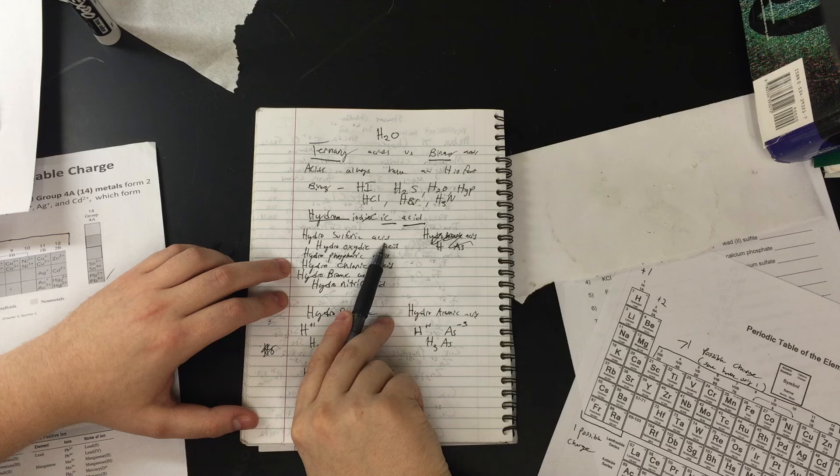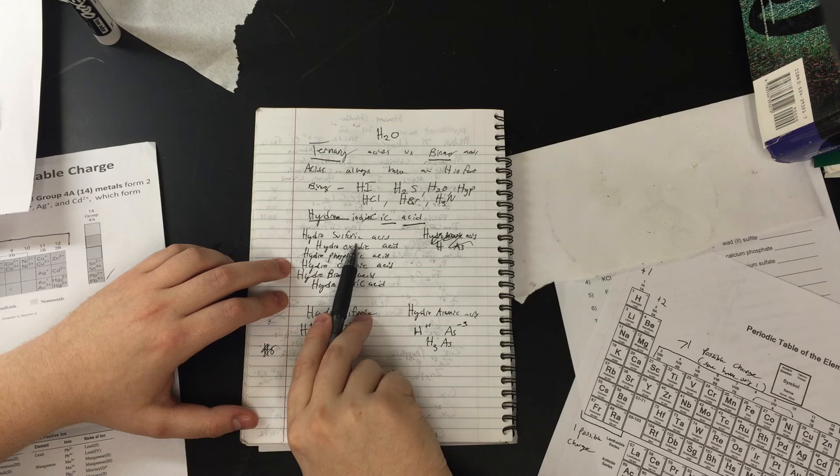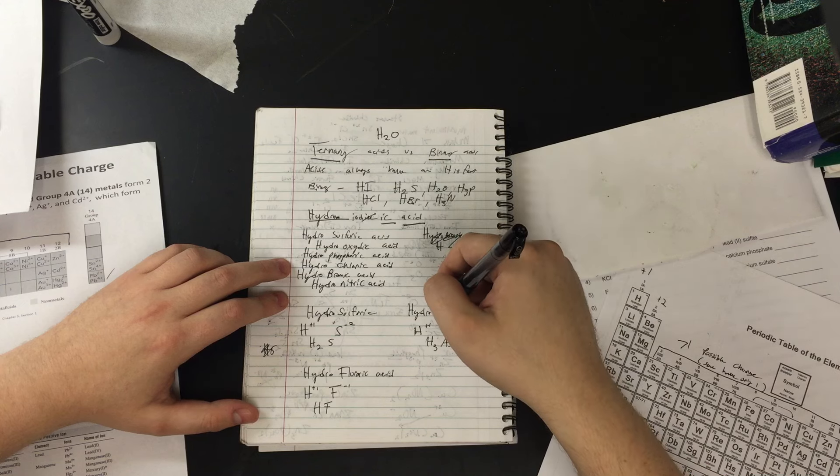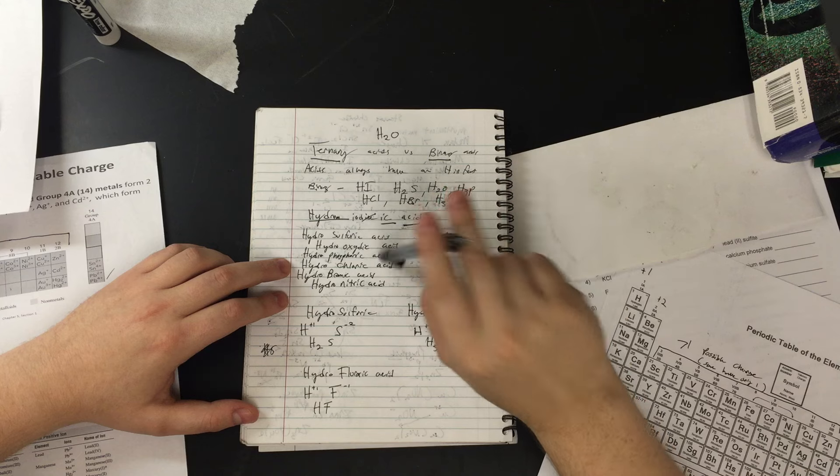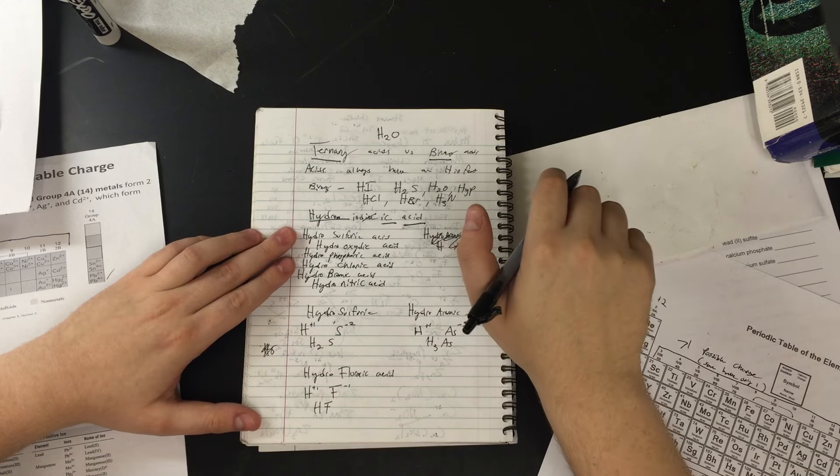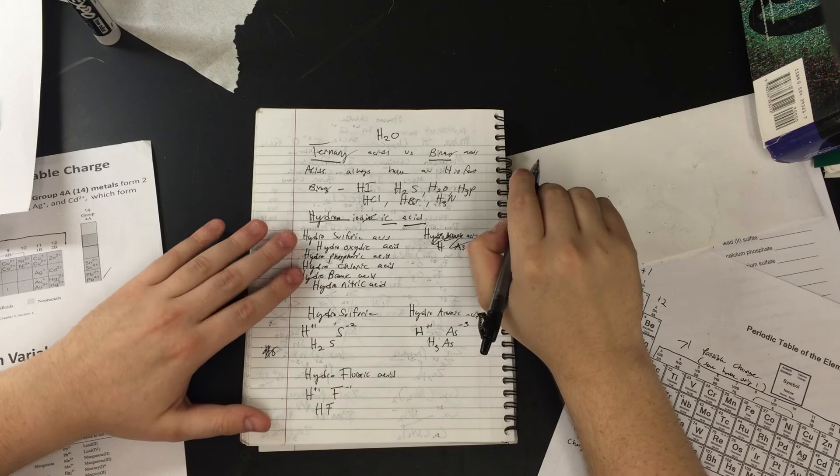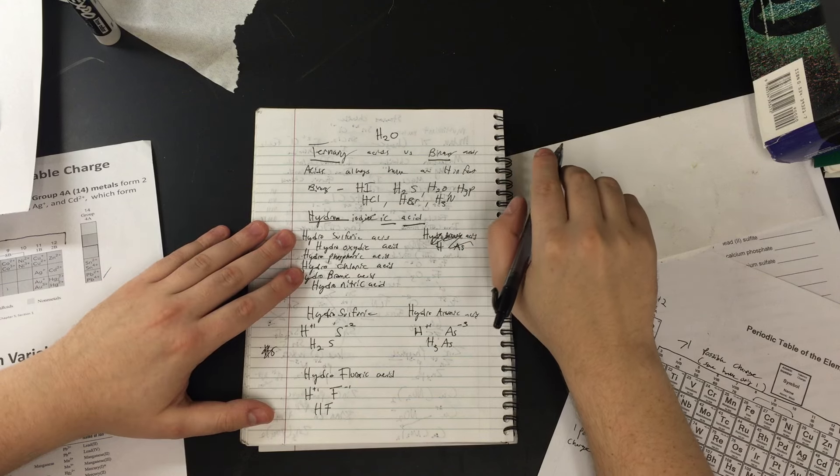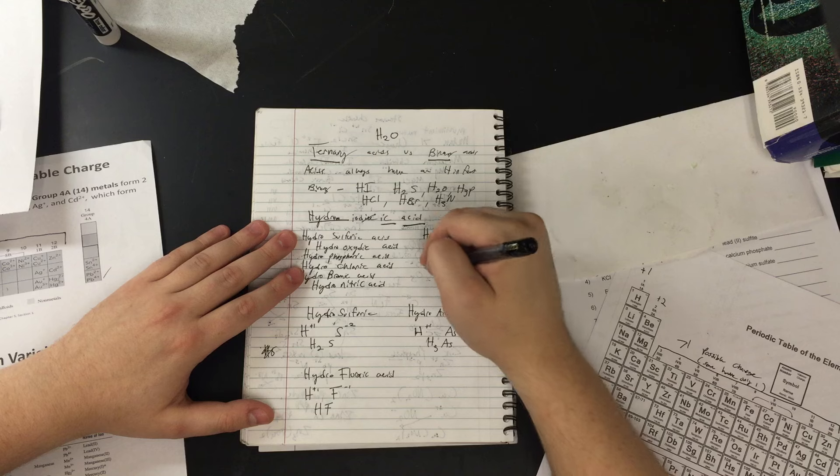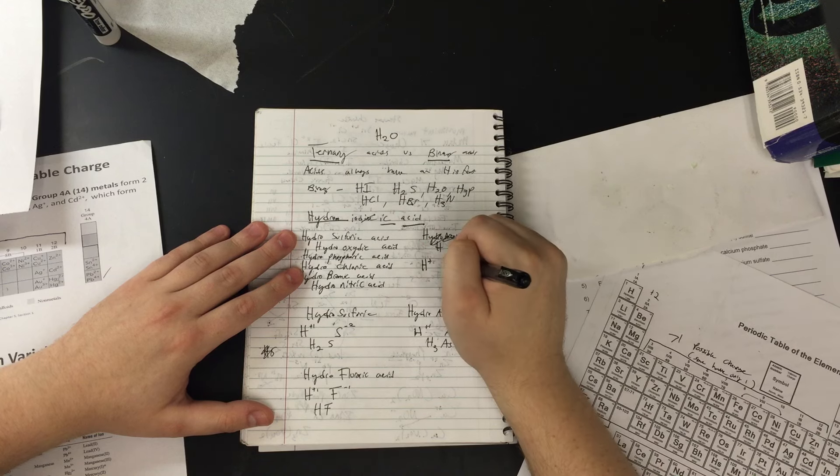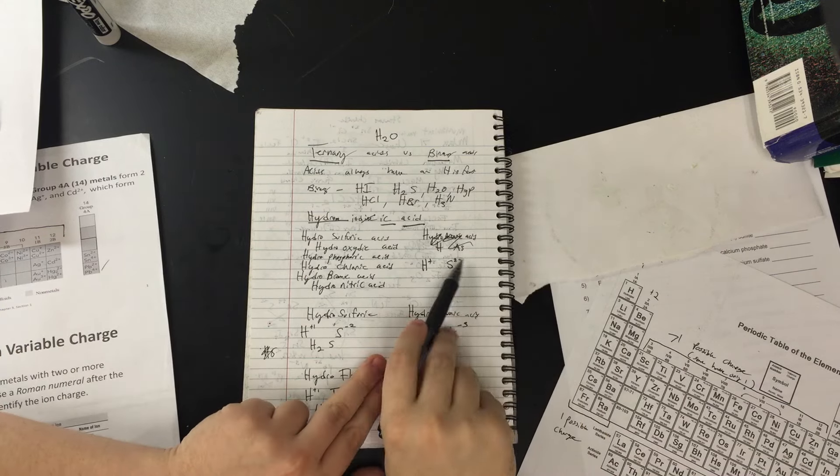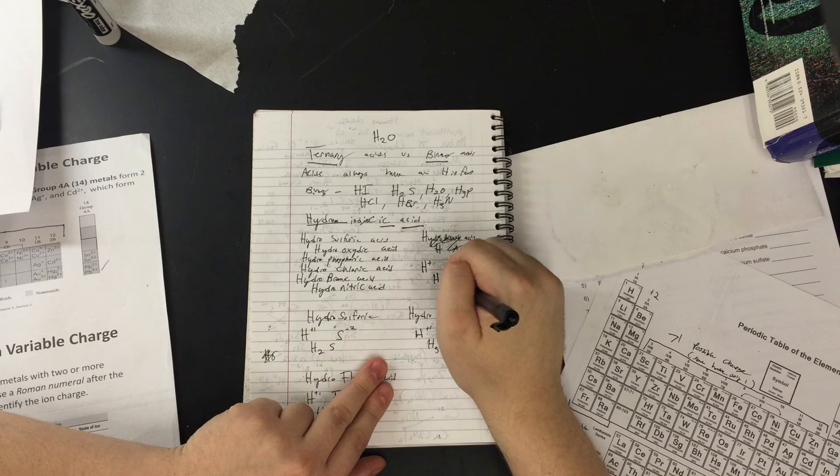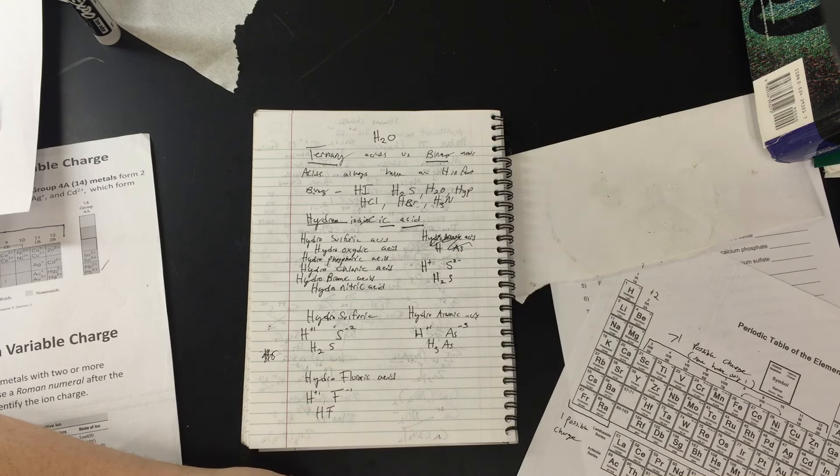Hydrosulfuric acid. Some of you guys would see the ic and say, maybe you remember that ic to ate and us to ite rule. Remember that that's only if there's no hydro. If this is hydro, simple binary. So hydrosulfuric acid, what is it going to be? Well, we see hydrogen and we see sulfur, S2- - remember it's in the sixth column, so it's going to have a 2- charge. We're going to switch the two and say H2S. That is hydrosulfuric acid.